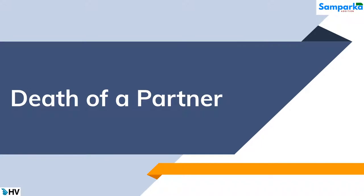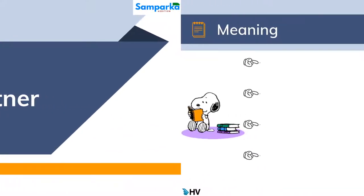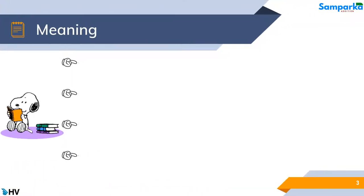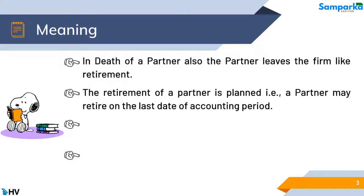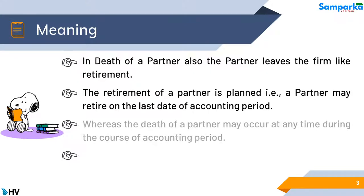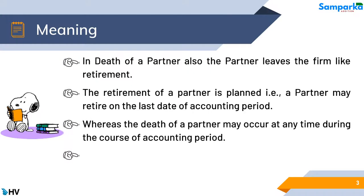Let's discuss the topic on death of a partner. In death of a partner, the partner also leaves the firm, like retirement. The retirement of a partner is planned — a partner may retire on the last date of the accounting period. Whereas the death of a partner may occur at any time during the course of the accounting period.